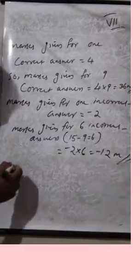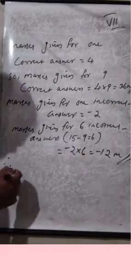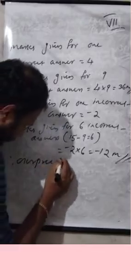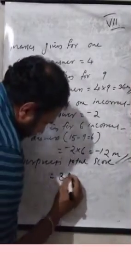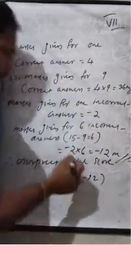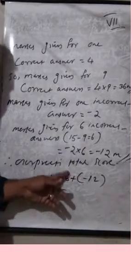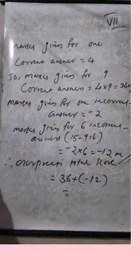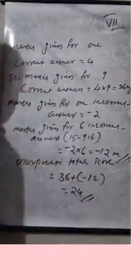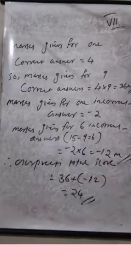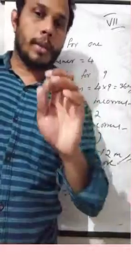Therefore, Gurpreet's total score is equal to 36 plus minus 12. Because 36 is the total for correct answers but 6 questions are incorrect, so 36 minus 12. What you will get? 24. Because it is plus and minus, so you subtract. Gurpreet's total score is 24.